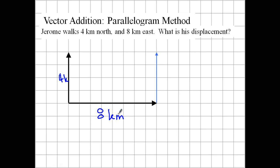So there's this thing called the parallelogram method. We take this vector and this vector and make a parallelogram out of it. Basically what we do is leave this one here and put another one the same length starting at the tip of this one, in the same direction. So it forms a nice little parallelogram — in this case, a lovely little rectangle.